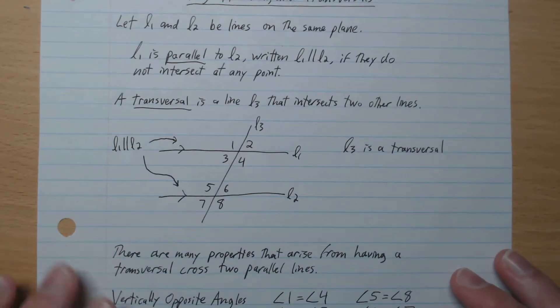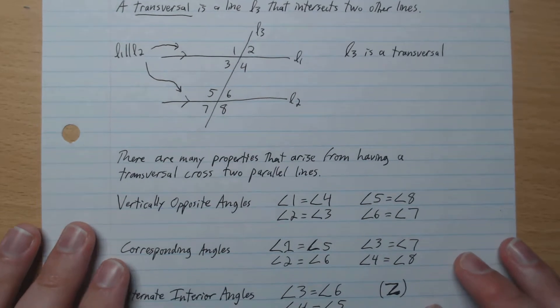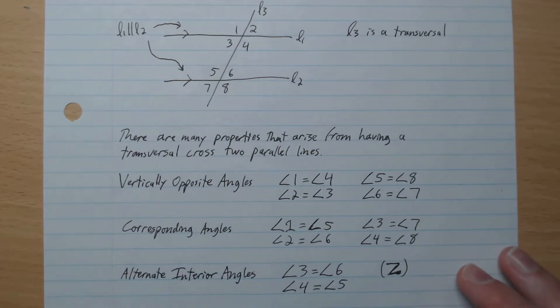There are many properties that arise from having a transversal cross two parallel lines. So let's look at some of those properties.